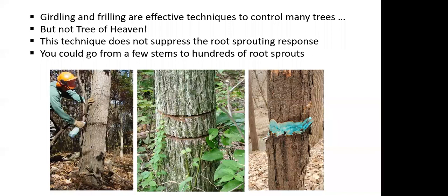For many trees we can utilize girdling and frilling very effectively, but we typically do not want to do this with Tree of Heaven. Even with the addition of herbicide in our cuts, this technique does not suppress the enormous root sprouting response Tree of Heaven can have when it's damaged. When we do this, we will often kill the large tree we're trying to control but will produce a community of dozens to hundreds of root sprouts. If we don't control those with a foliar application within that growing season or the next, they're often overhead high because they grow very quickly, and now we've got an even bigger infestation that becomes very difficult to control.